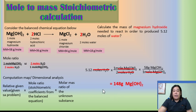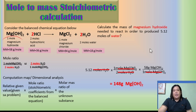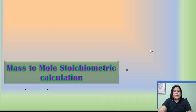Take note: since the starting amount is 3 significant figures (5.12), the final answer should also be 3 significant figures. This will help you determine how many digits to include in your final answer.